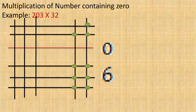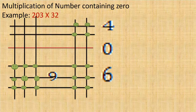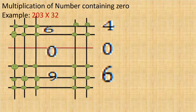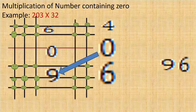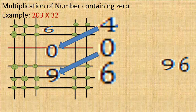Counting the remaining intersections: we get 4, then 9, then 0 again for the red-color line, then 6. Starting from the right bottom corner: write 6 in the answer. Then add 0 and 9, which is 9. Then add 4 plus 0, which is 4. And finally write 6. So the result of 203 multiplied by 32 is 6496.